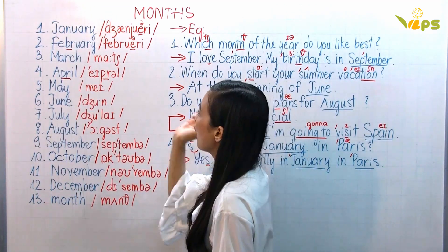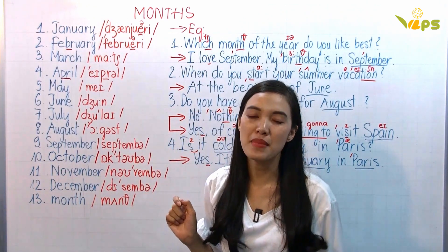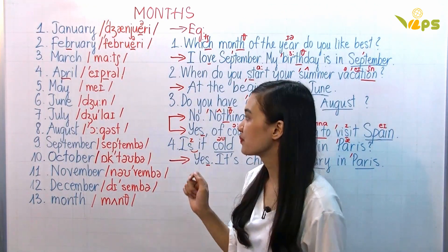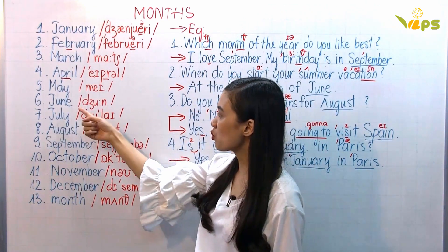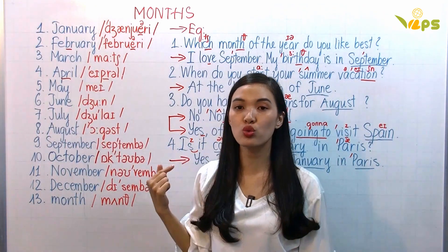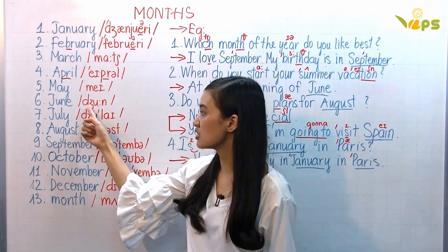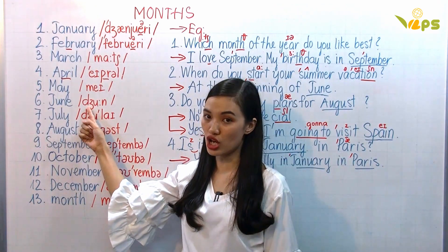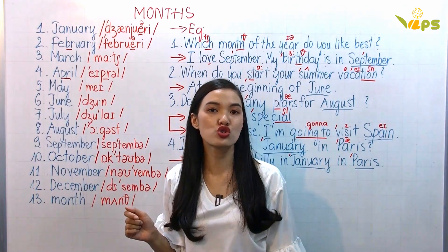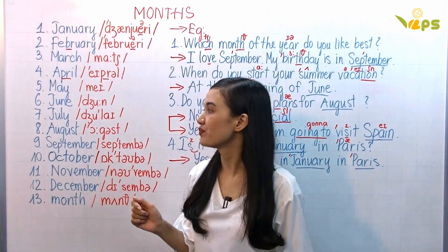Now, very easy: May. This one: June — long U sound, and this is a J sound. So we have June.